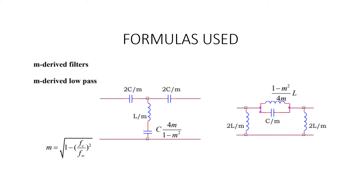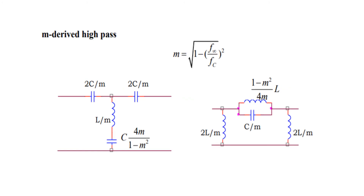Next is the M-derived high pass filter formula. The value of M is equal to the square root of 1 minus (F∞ / Fc)².